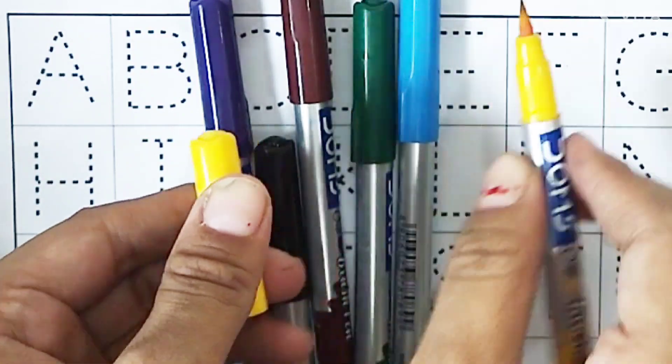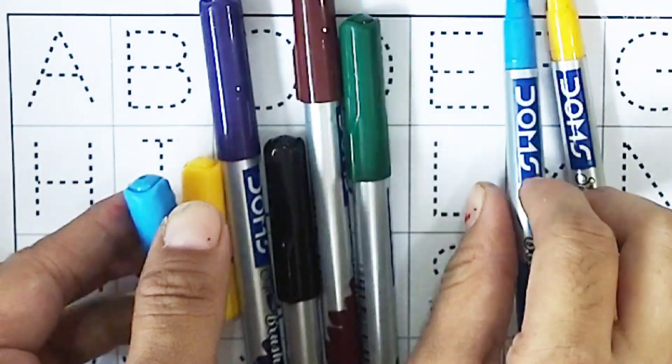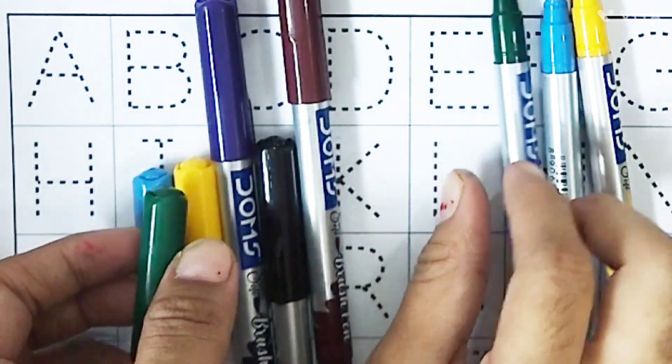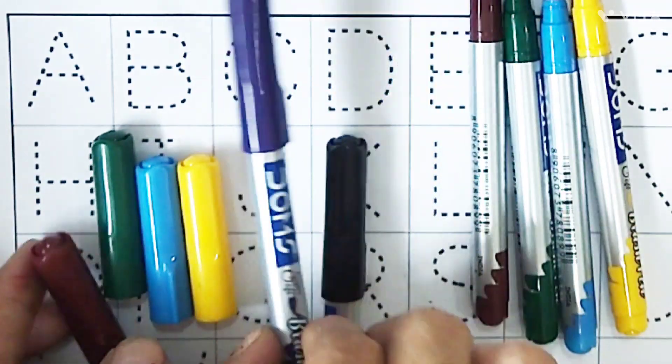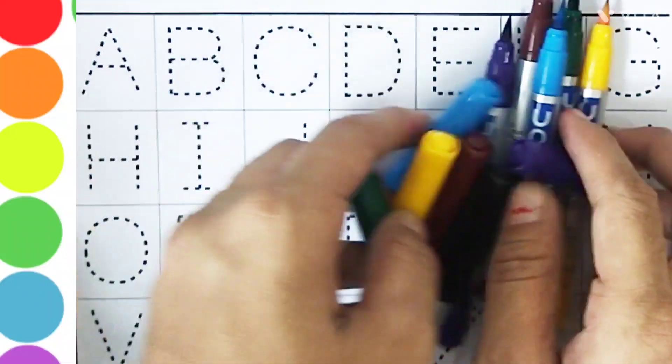Yellow color. Sky blue color. Dark green color. Brown color. Purple color.